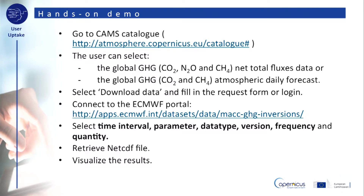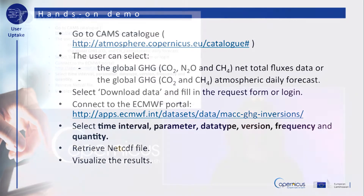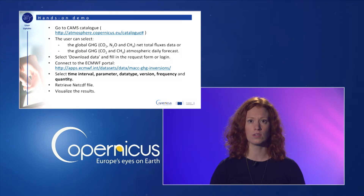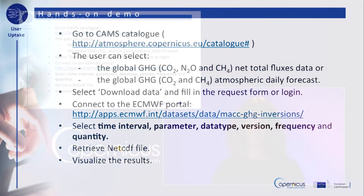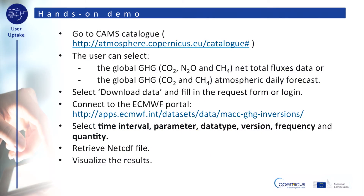Here we show the necessary steps to select and download CAMS greenhouse gas data. First, go to the CAMS catalogue using the link on the slide. The user can select the following products: the Global Greenhouse Gas Net Total Flux or the Global Greenhouse Gas Daily Forecast.